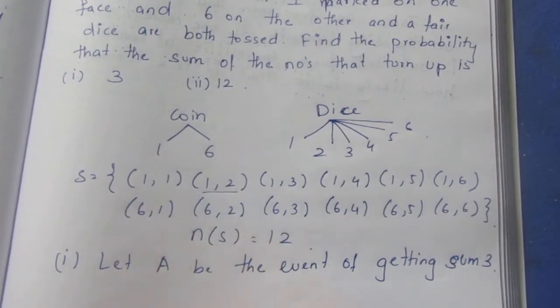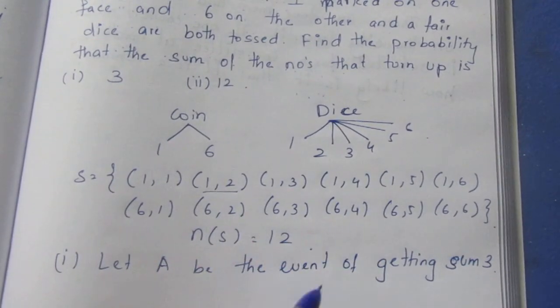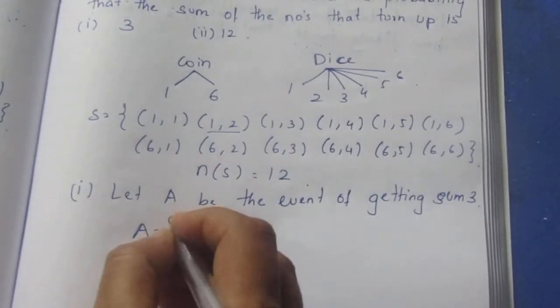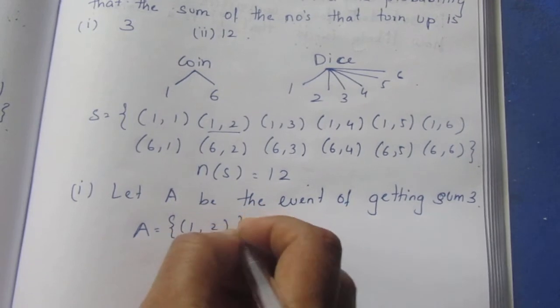So A equals (1,2). When we add 1 and 2, we get 3.